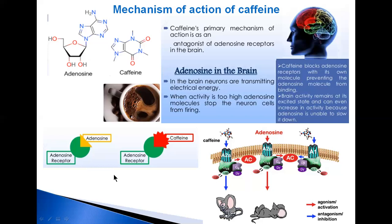When caffeine is consumed, it antagonizes adenosine receptors. In other words, caffeine prevents adenosine from activating the receptor by blocking the location on the receptor where adenosine binds to it. As a result, caffeine temporarily prevents or relieves drowsiness and thus maintains or restores alertness.